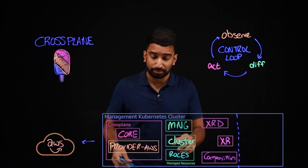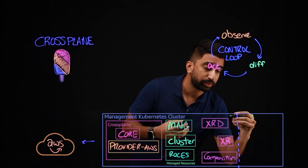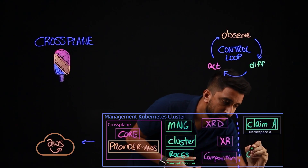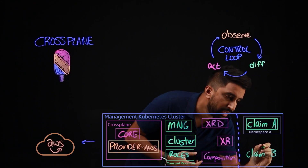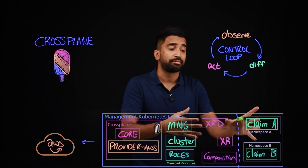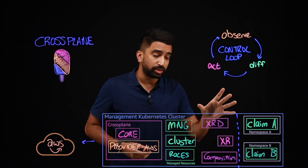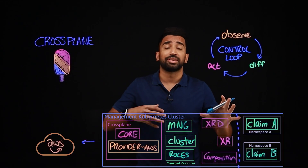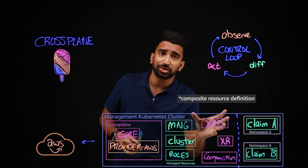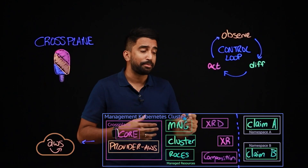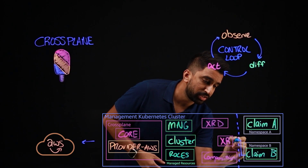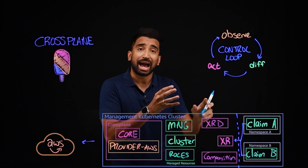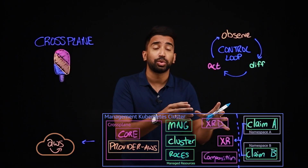And here's where we get to claims. Claims enable app teams to essentially make a claim against a composite resource. So let's say in one namespace we have claim A, and in another claim B, because we want to have production-ready EKS clusters. Claims are scoped to namespaces. Once we create those claims, that's going to provision a composite resource. These claims define some parameters — those parameters are defined by the custom resource definition and the composition. And once we create these, this will provision a composite resource. It helps to think of a claim as the application team's interface to a composite resource.